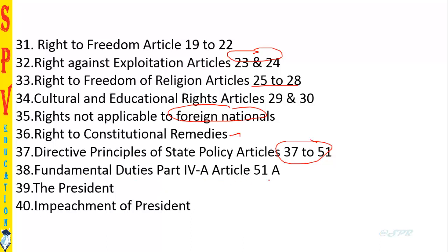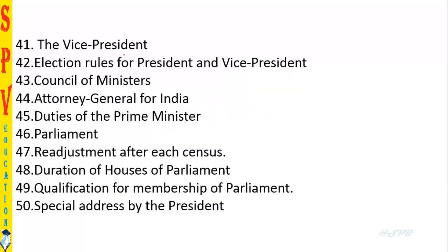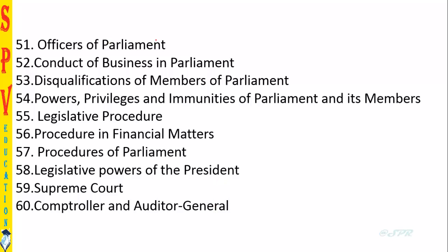Next we come to DPSP — Directive Principles of State Policy — which the state must implement in governance, covered under Articles 37-51. Then fundamental duties under Part 4A, Article 51A, which was newly added. Next we'll see the President and his functions, how he can be impeached, the Vice President and his details, election rules for President and Vice President, the Council of Ministers, and the Attorney General of India.